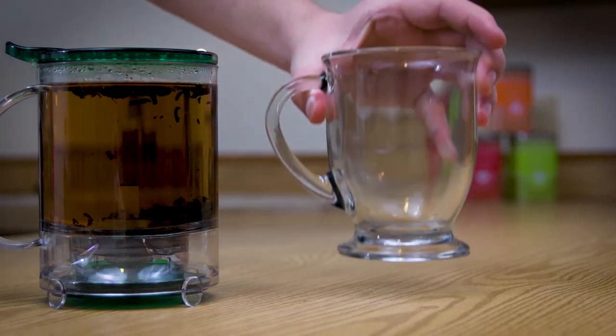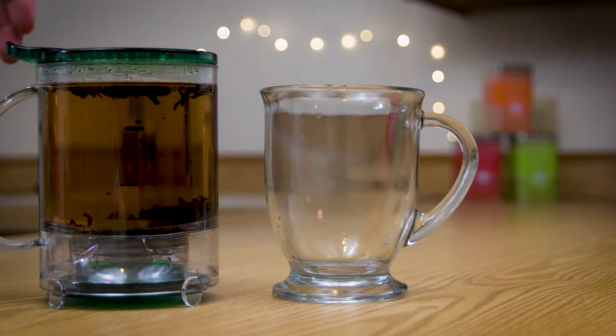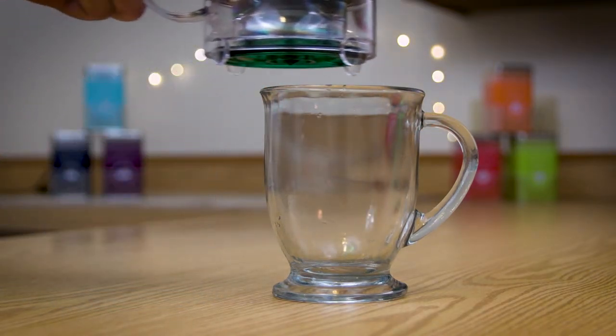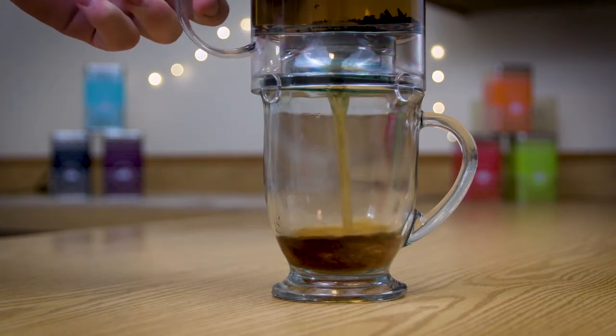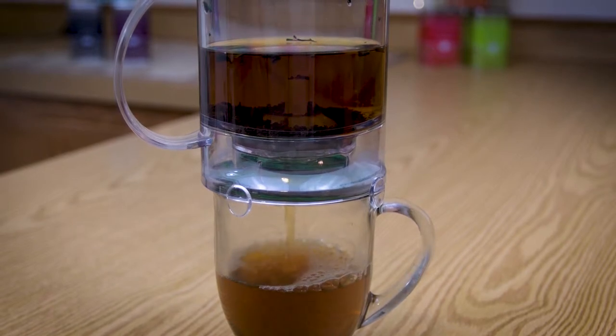Once the tea has completed brewing, all you must do to serve it is take the Teavana and place it on top of your favorite mug. The rim of the mug presses gently up on the pressure plate and the hot tea is dispensed directly into your mug.